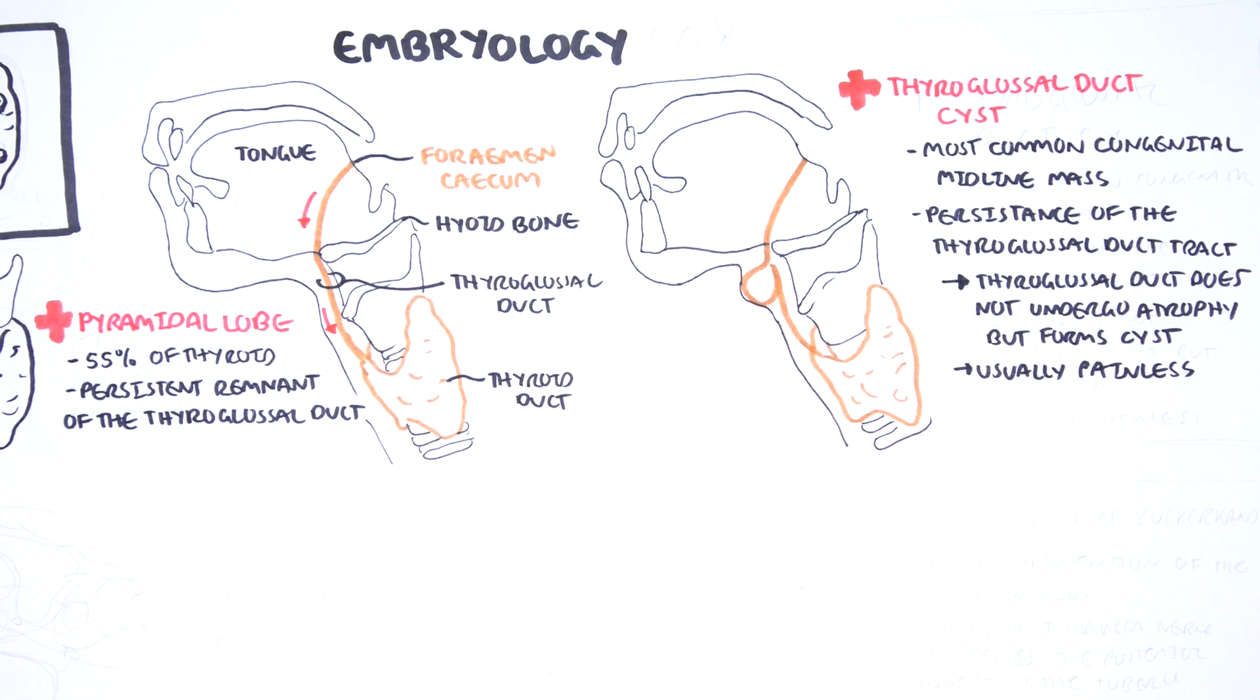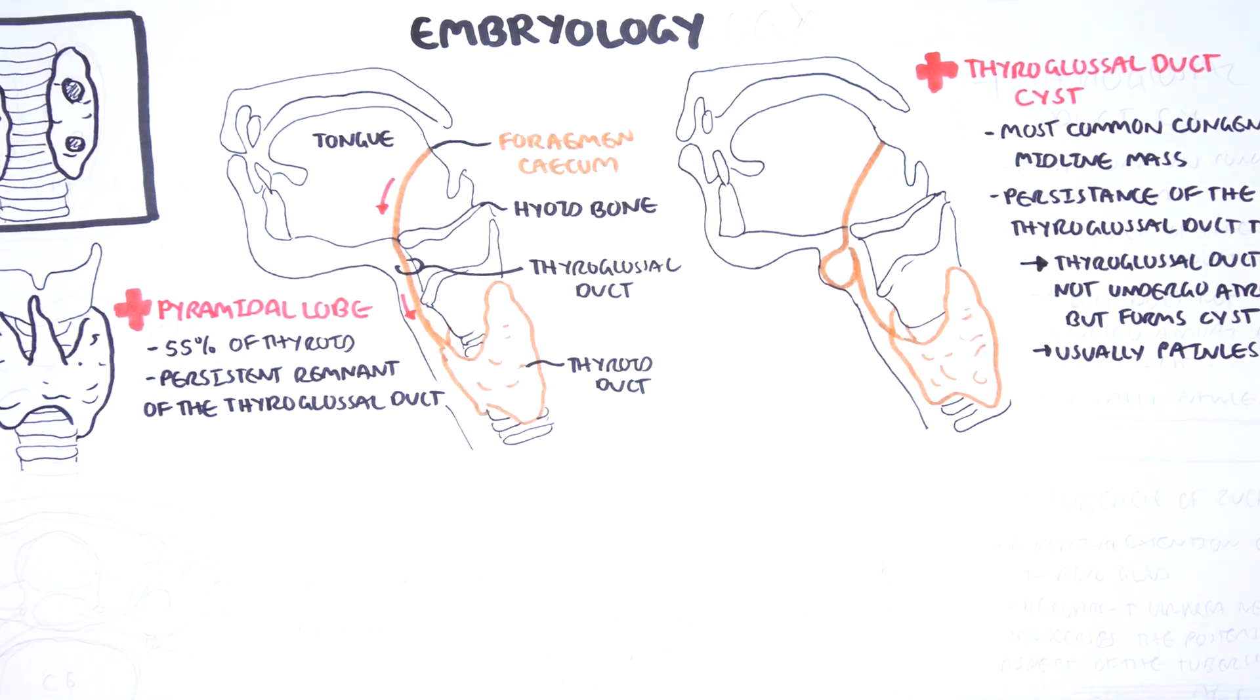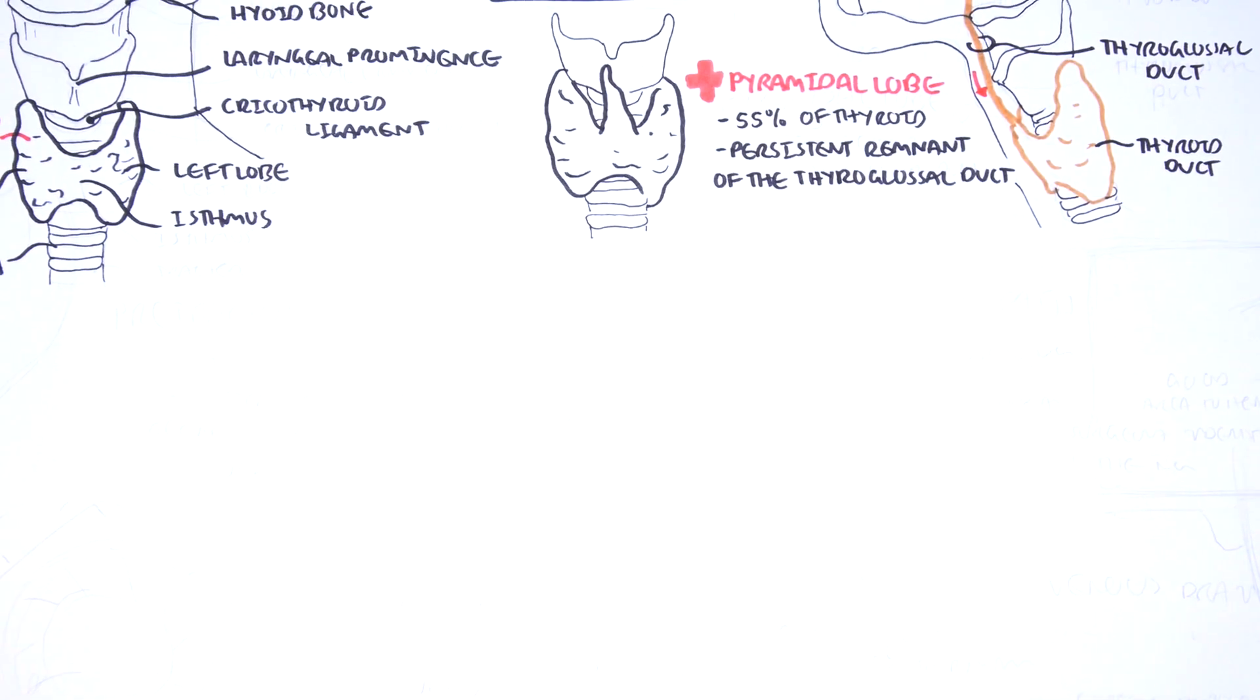Clinically, because the thyroglossal duct arises from the base of the tongue, the thyroglossal duct cyst will move with tongue protrusion. The pyramidal lobe is a result of the thyroglossal duct which may have not atrophied completely.